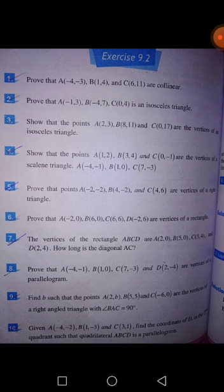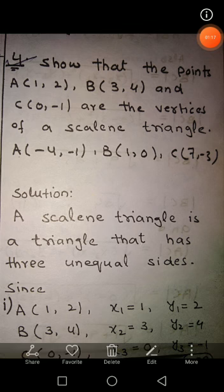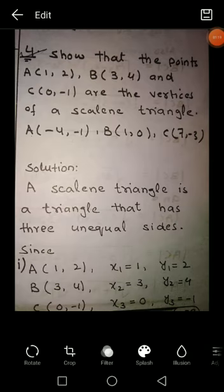Question number four: show that the points A, B, C are the vertices of a scalene triangle. Part one has points A = (1, 2), B = (3, 4), and C = (0, −1). Let's solve part one.